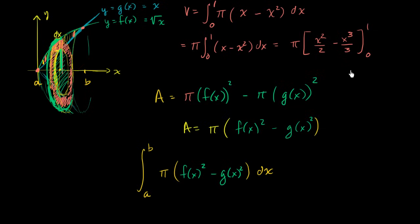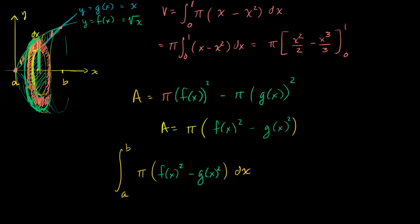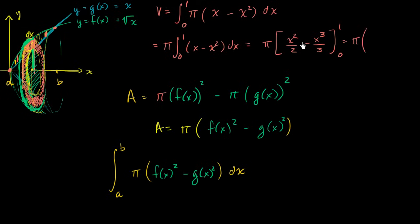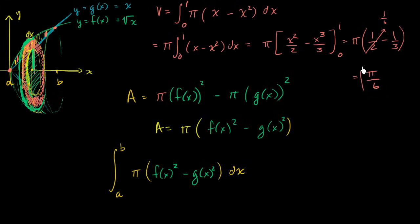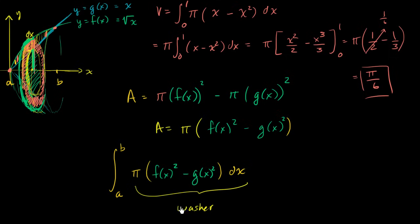So this equals pi times the integral from 0 to 1 of x minus x squared dx, which equals pi times: the antiderivative of x is x squared over 2, and the antiderivative of x squared is x to the third over 3. Evaluating from 0 to 1: at 1 we get one half minus one third, and at 0 everything is 0. So we get pi times one half minus one third, which is pi times one sixth, equal to pi over 6 — the exact same answer as the last video. That's because we did the exact same thing, just conceptualized as a washer rather than separate disk methods for the outer and inner shapes.